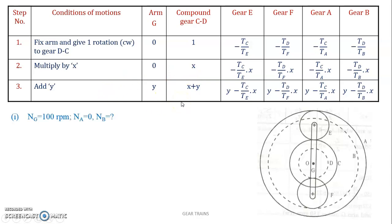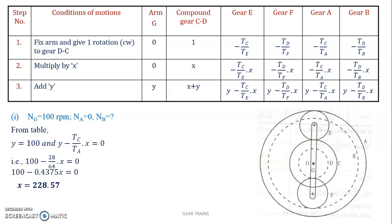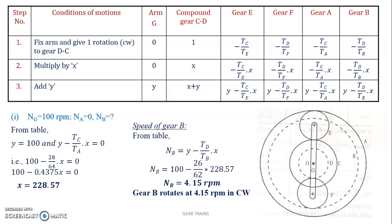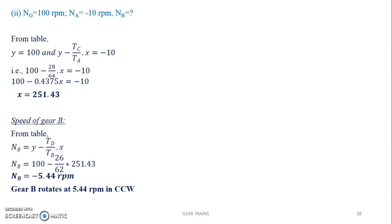Multiply by X and add Y to get the speed expressions. The speed of arm G is 100 and NA equals 0 — substitute the values and get the value of NB. Similarly for the last case, NG is 100 and NA equals minus 100 — substitute and get the answers.